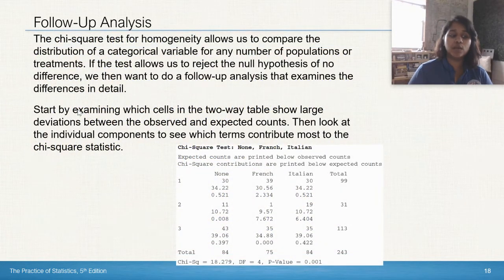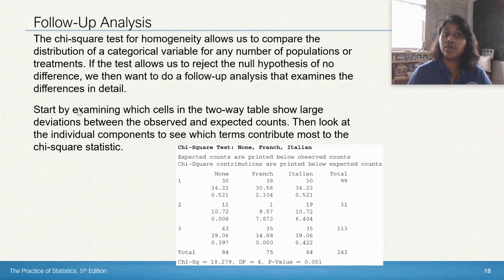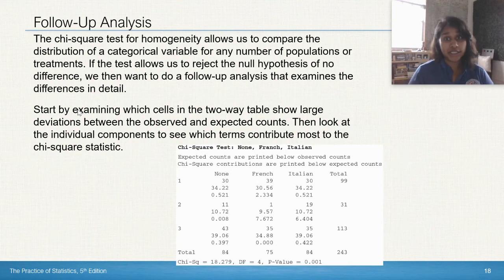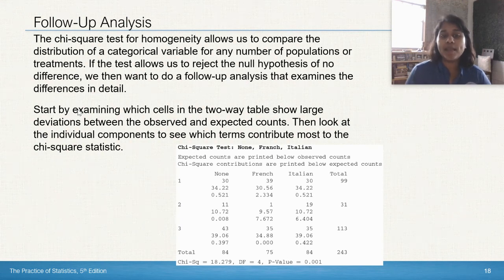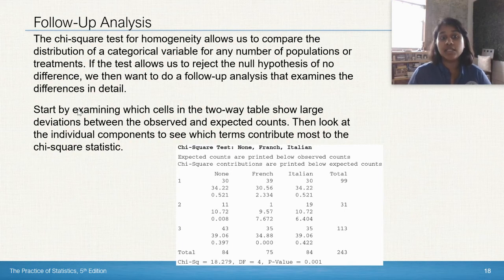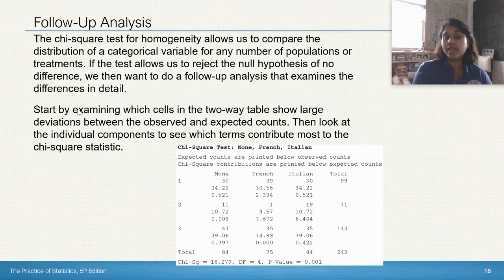But what about our follow-up analysis? So our chi-square test for homogeneity allows us to compare the distribution of a categorical variable for any number of populations or treatments. If the test allows us to reject, which we just did, of no difference, we want to then do a follow-up analysis that examines the differences in detail. So you don't just get to reject and say, yeah, there's obviously a difference when we play different music. You have to start doing some analysis of why or where you notice this difference. So we're going to start by examining which cells in the two-way table show large deviations between the observed and expected counts, then look at the individual components to see which terms contribute most to the chi-square statistic.